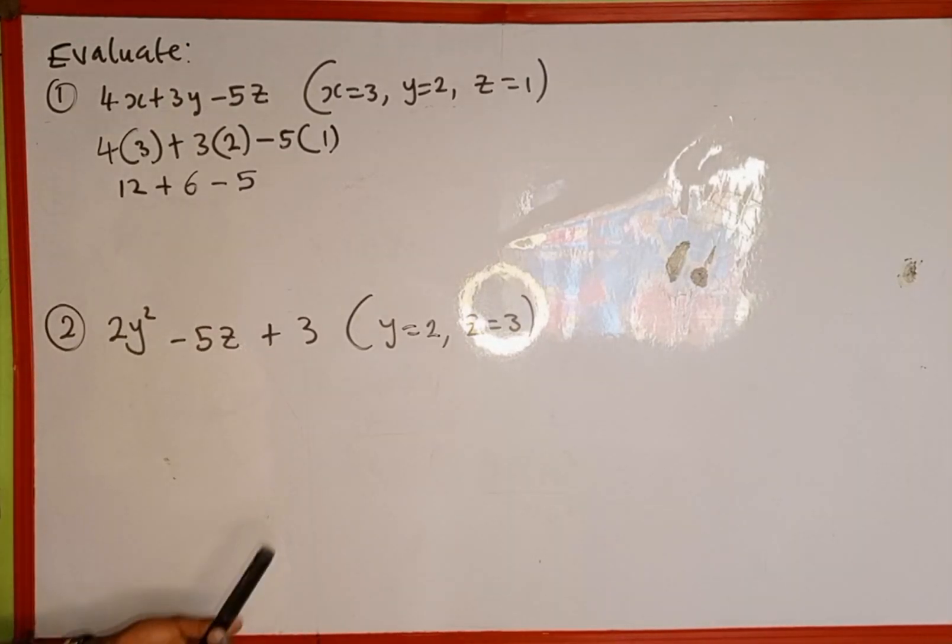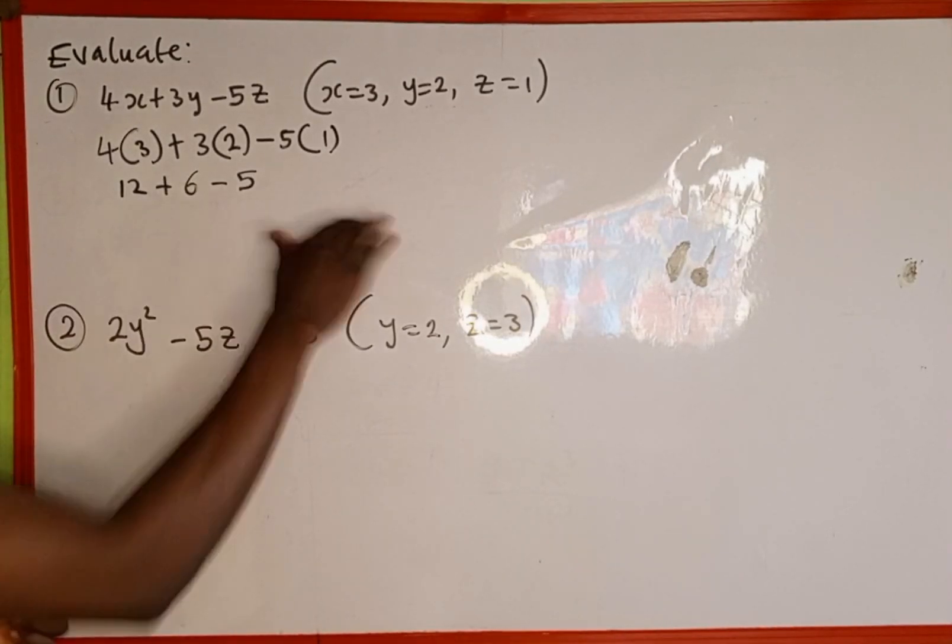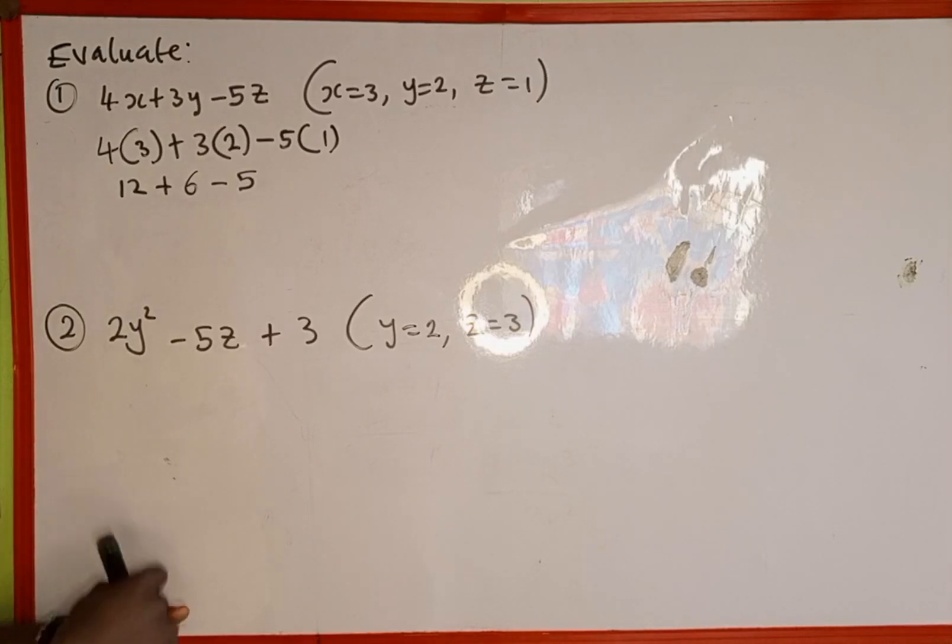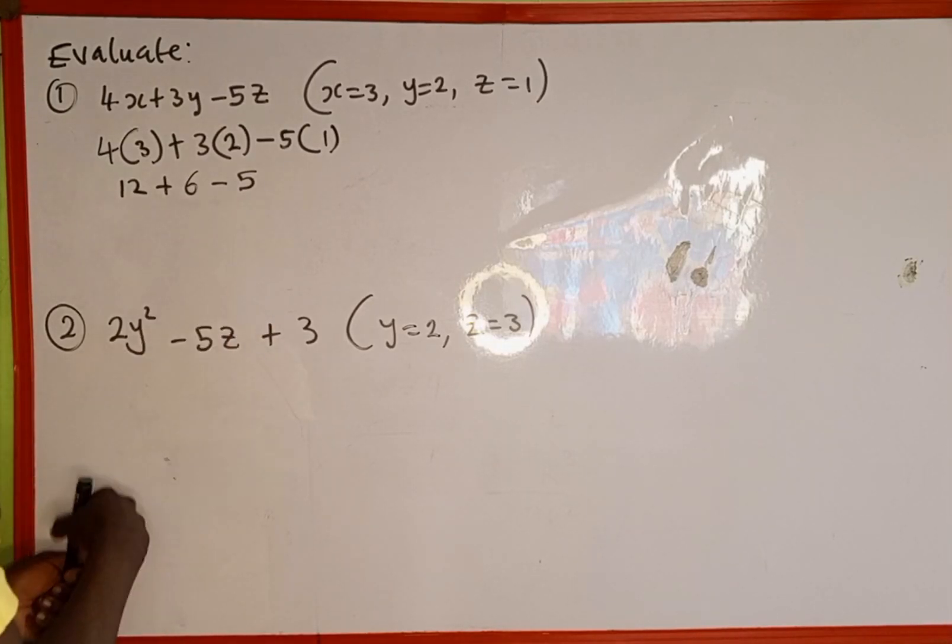So now we just add and subtract: 12 + 6 = 18, then 18 - 5 = 13. So this is the evaluation of this expression.